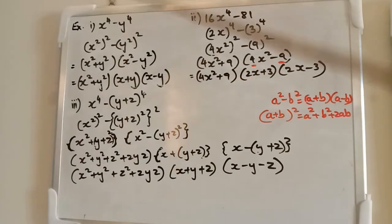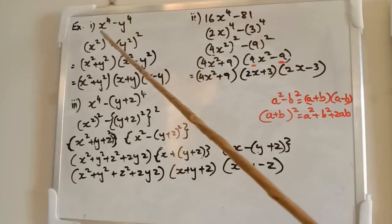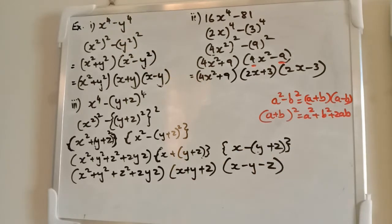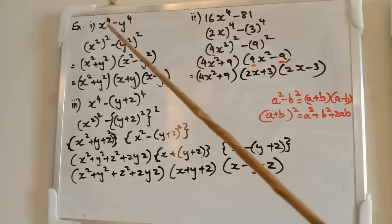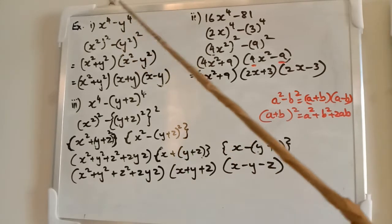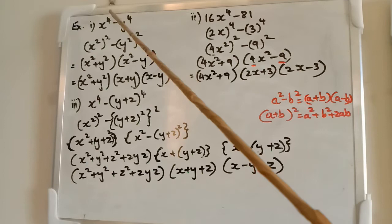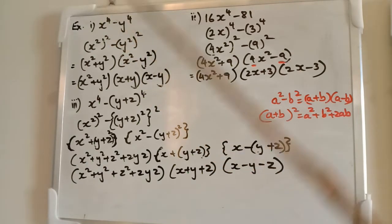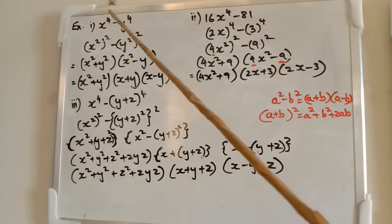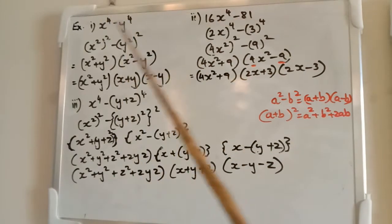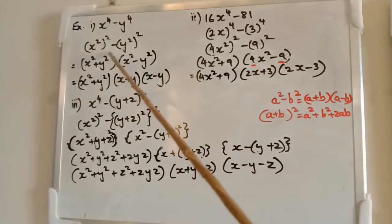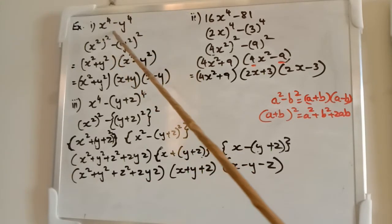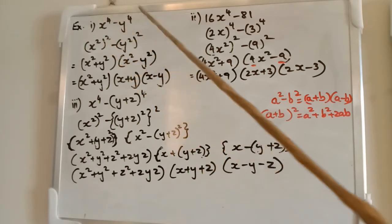Let us do further problems based on difference of squares. The question is x raised to the power of 4 minus y raised to the power of 4. Here we should remember that all multiples of 2 will be even. So, even powers can be presented as difference of squares. Difference means a minus sign in between variables having even powers.